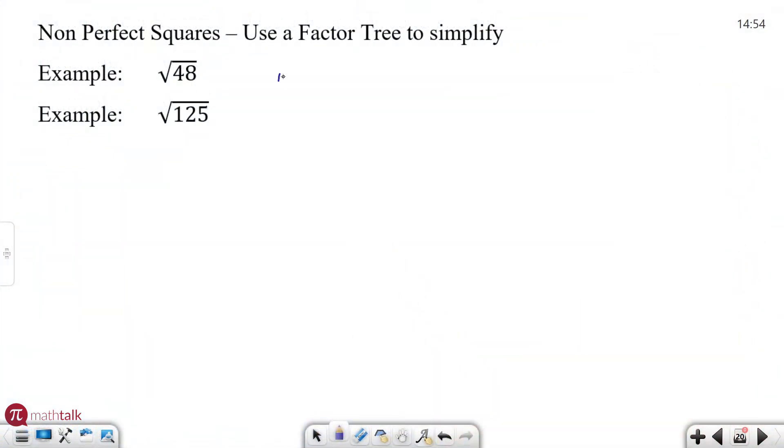I want to go ahead and write square root of 48 up top here. A factor tree just basically means you start breaking down the value of your number underneath the square root symbol until you can simplify it as far down as you can. What you do is find two numbers that multiply together to get 48.